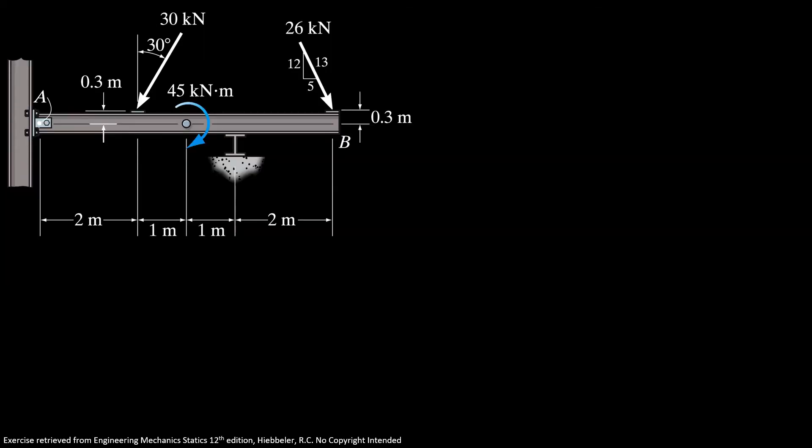Now we're gonna do the moment about point A because we have to specify a distance measured from A. So here we have to find the sum of moments about A, minus 45 kilonewton meter. That's our moment.